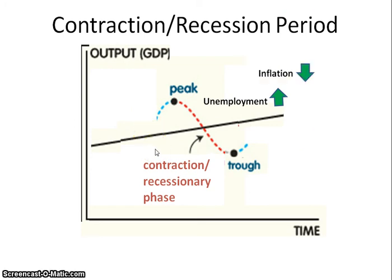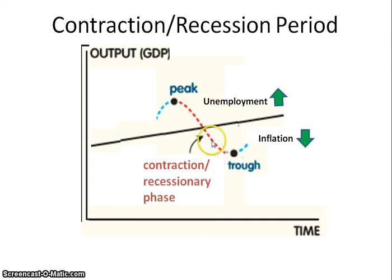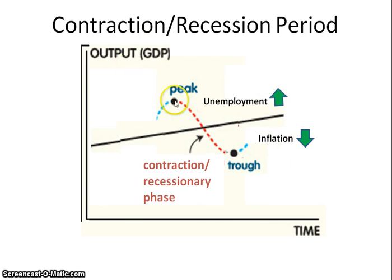With inflation during the contractionary phase, inflation is going down. This general increase in the price level slows because there is a decrease in demand, so prices are not rising but rather going down. GDP and inflation have a positive relationship. When GDP is going down in this contractionary phase, you have unemployment going up and inflation going down.